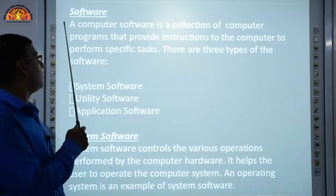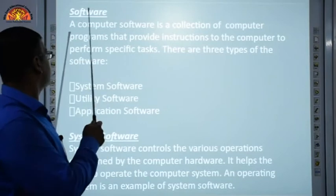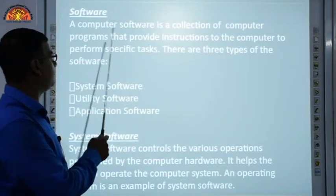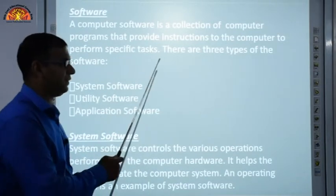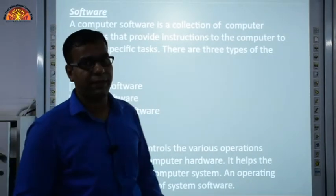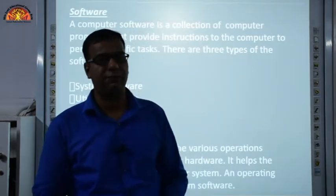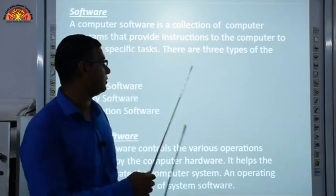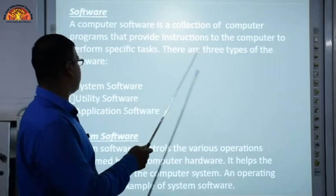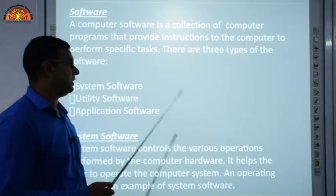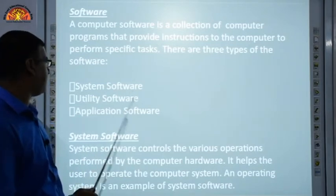Now, software. Software is another important part of the computer. Computer software is a collection of computer programs that provide instructions to the computer to perform specific tasks. There are three types of software: system software, utility software, and application software.